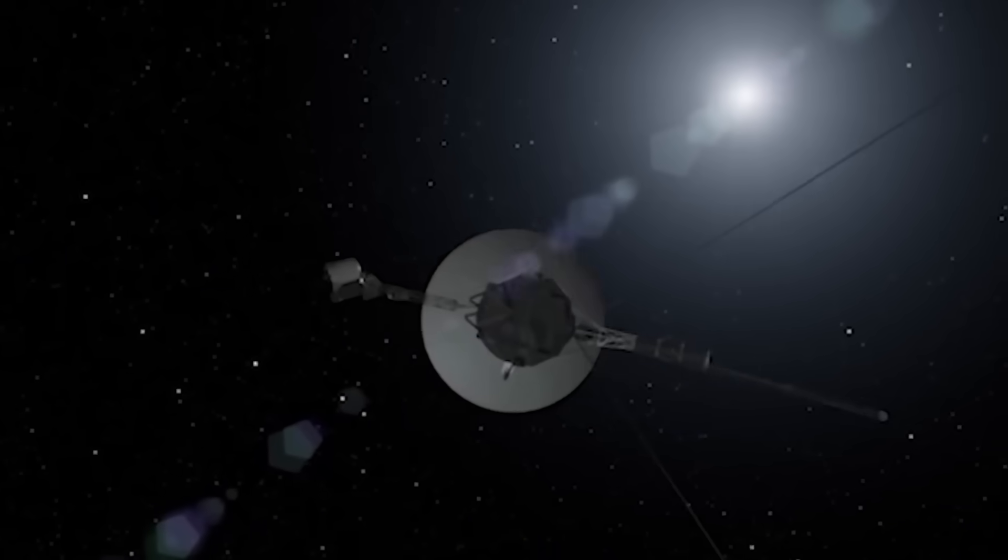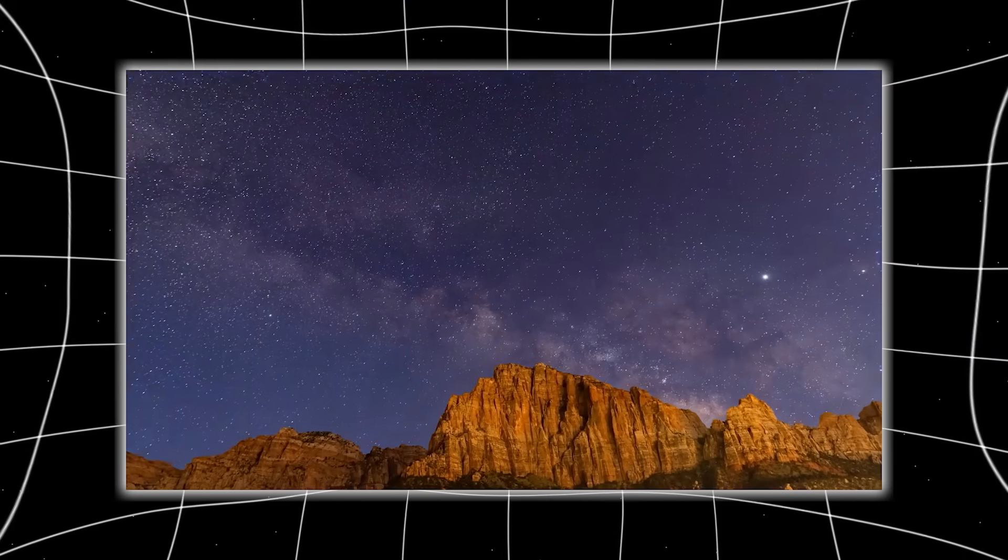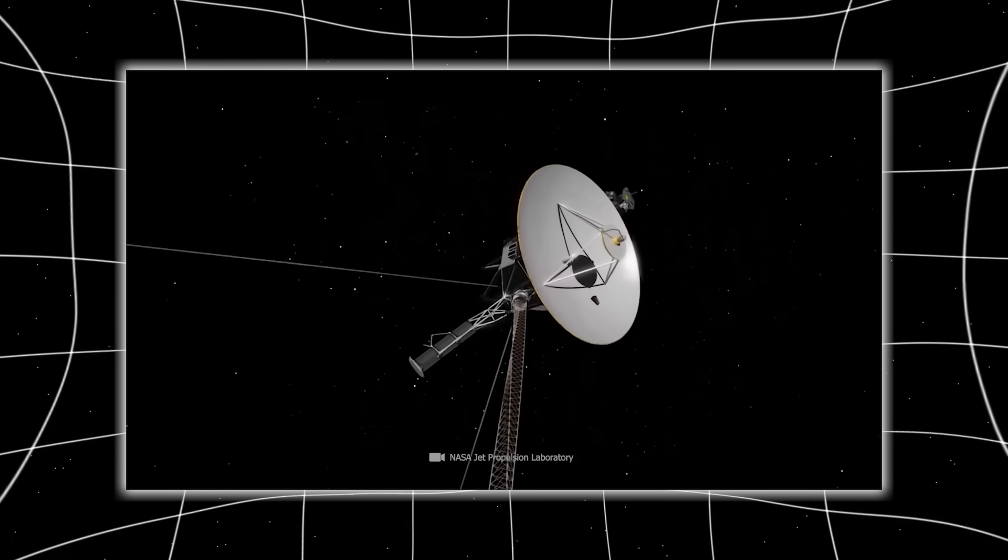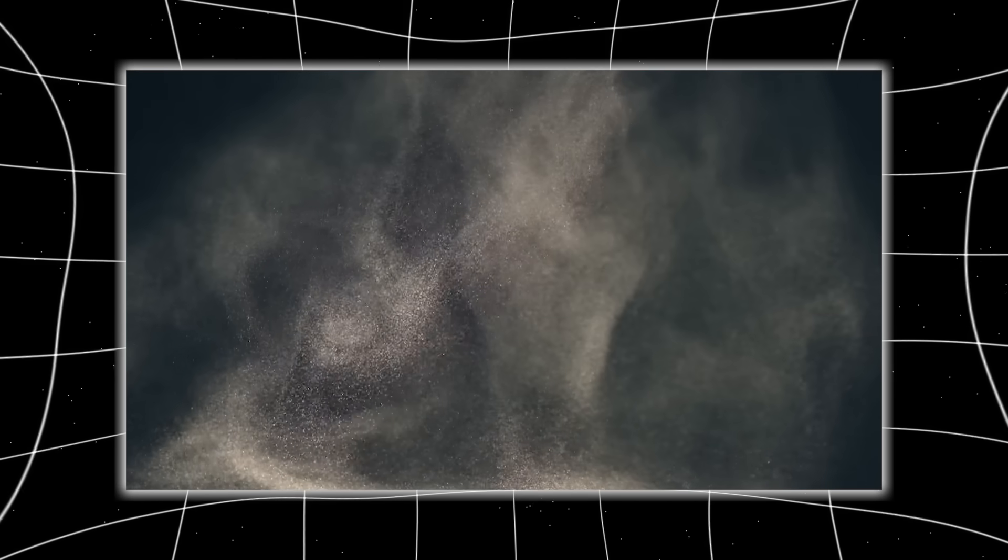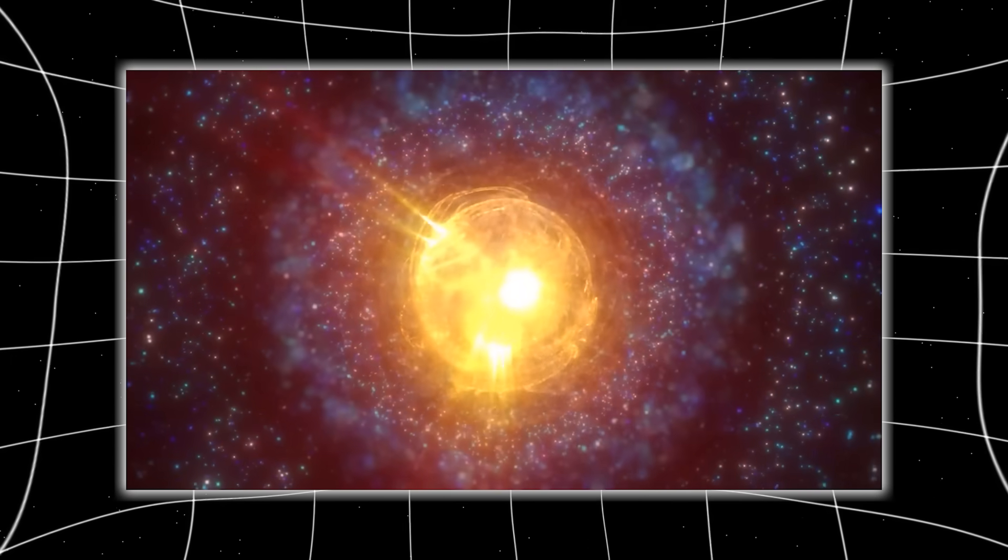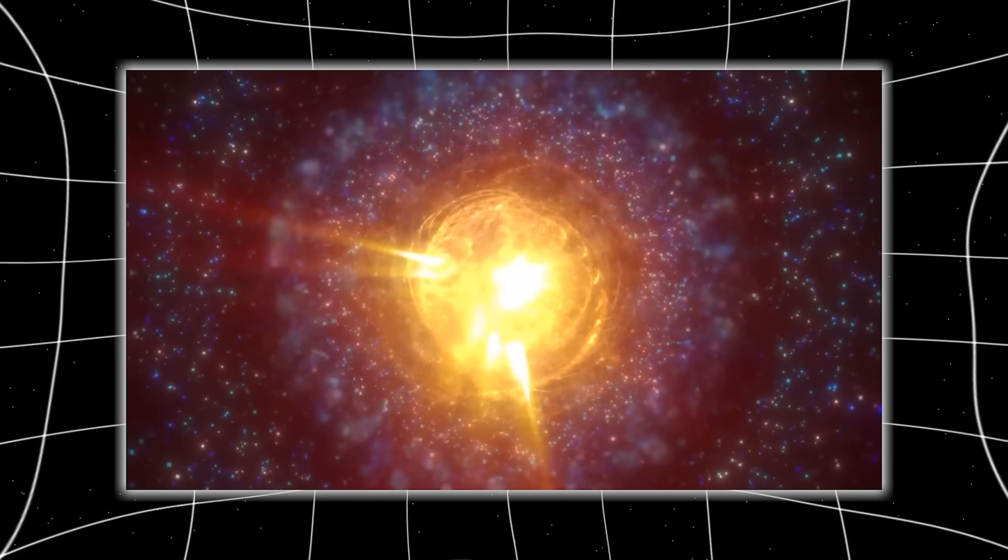And then, temperature spikes. Every 4.8 hours, Voyager's external systems would heat up by nearly 30 degrees, then cool back down. Like clockwork. Like breathing. The energy wasn't coming from inside. Something external was touching the probe.